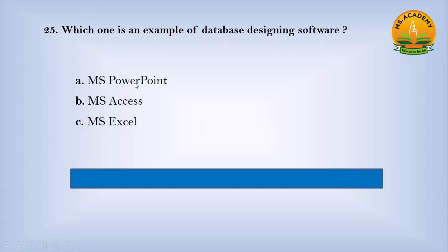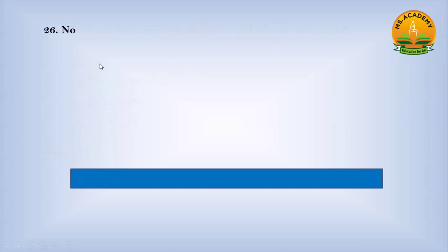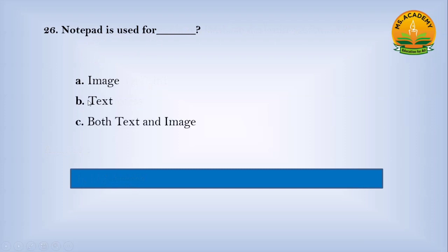Which one is an example of database designing software? Option A: MS PowerPoint, option B: MS Access, option C: MS Excel. Answer: B — MS Access. Notepad is used for — option A: image, option B: text, option C: both text and image. Answer: B — text.